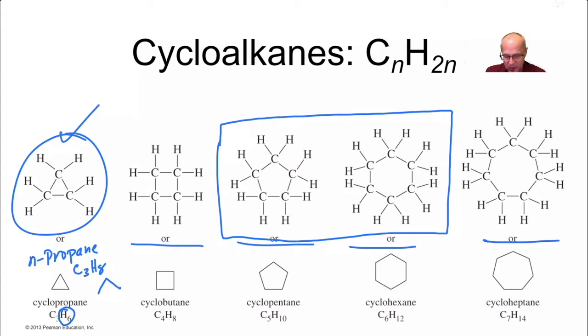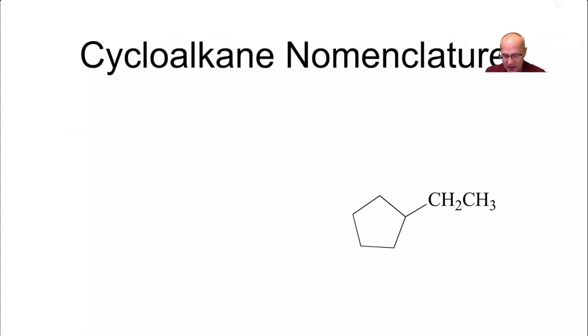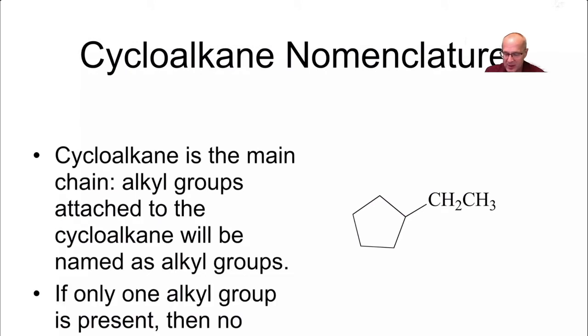Now, let's learn a little bit more about them. How to name them. When you're naming a cycloalkane, the alkyl group attached to the cycloalkane will be named as an alkyl group. So this is an ethyl group right here, right? And this is cyclopentane.